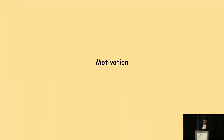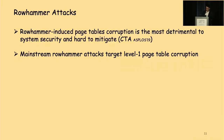Of the many sensitive objects corrupted by existing Rowhammer attacks, page table corruption is the most detrimental to system security and hardest to mitigate. If level 1 page tables are placed onto victim rows and corrupted by Rowhammer, the whole system security can be compromised. Therefore, mainstream Rowhammer attacks target level 1 page table corruption.